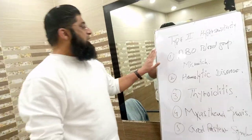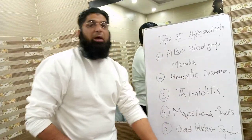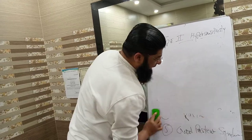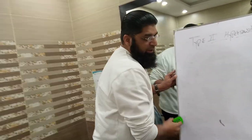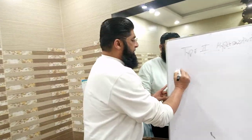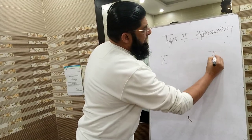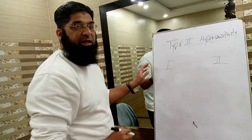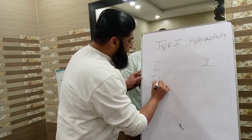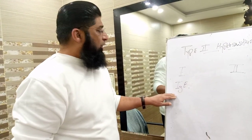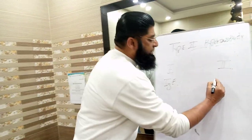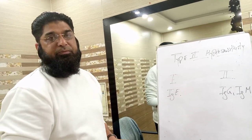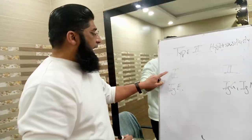These are some of the clinical examples of type 2 hypersensitivity reaction. Now we very briefly compare type 2 with type 1 hypersensitivity reaction. In type 1 hypersensitivity reaction there is involvement of IgE antibodies, while in type 2 hypersensitivity there is involvement of IgG or IgM antibodies.